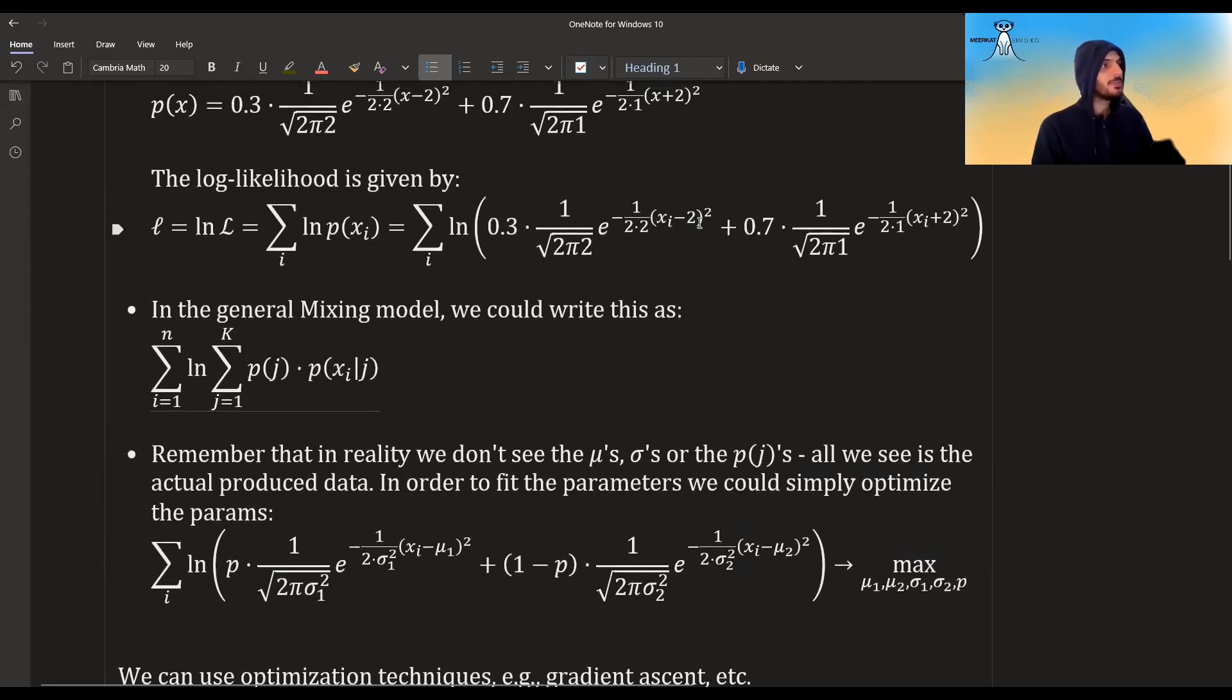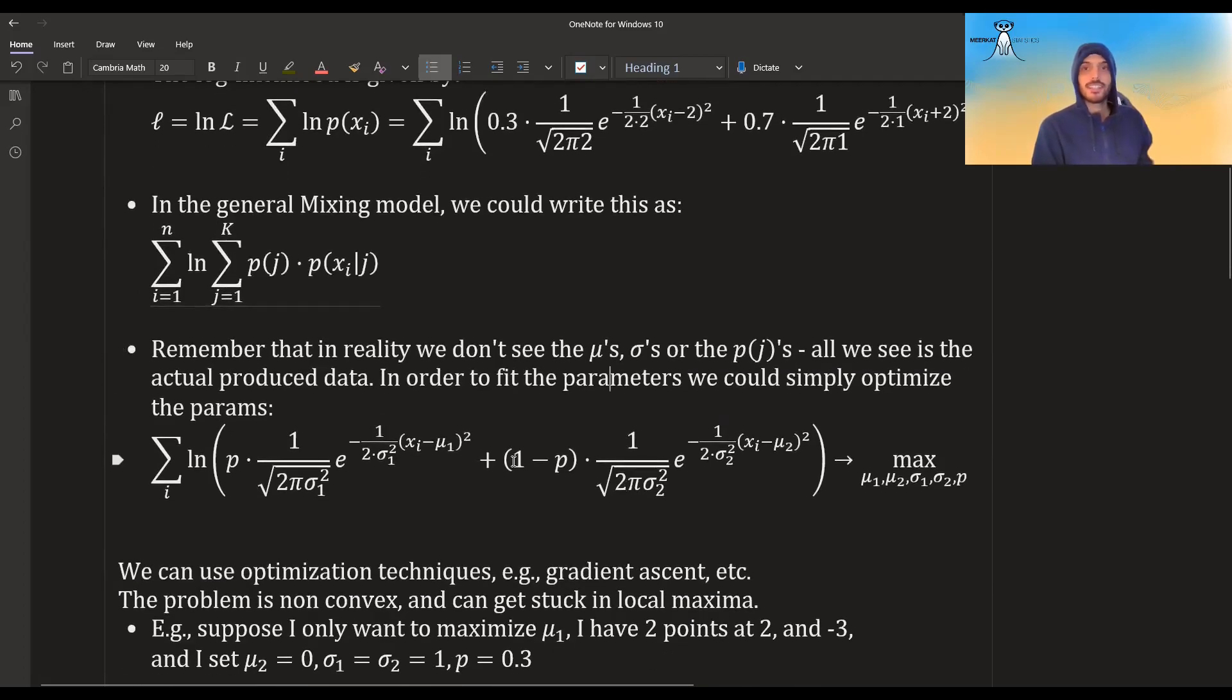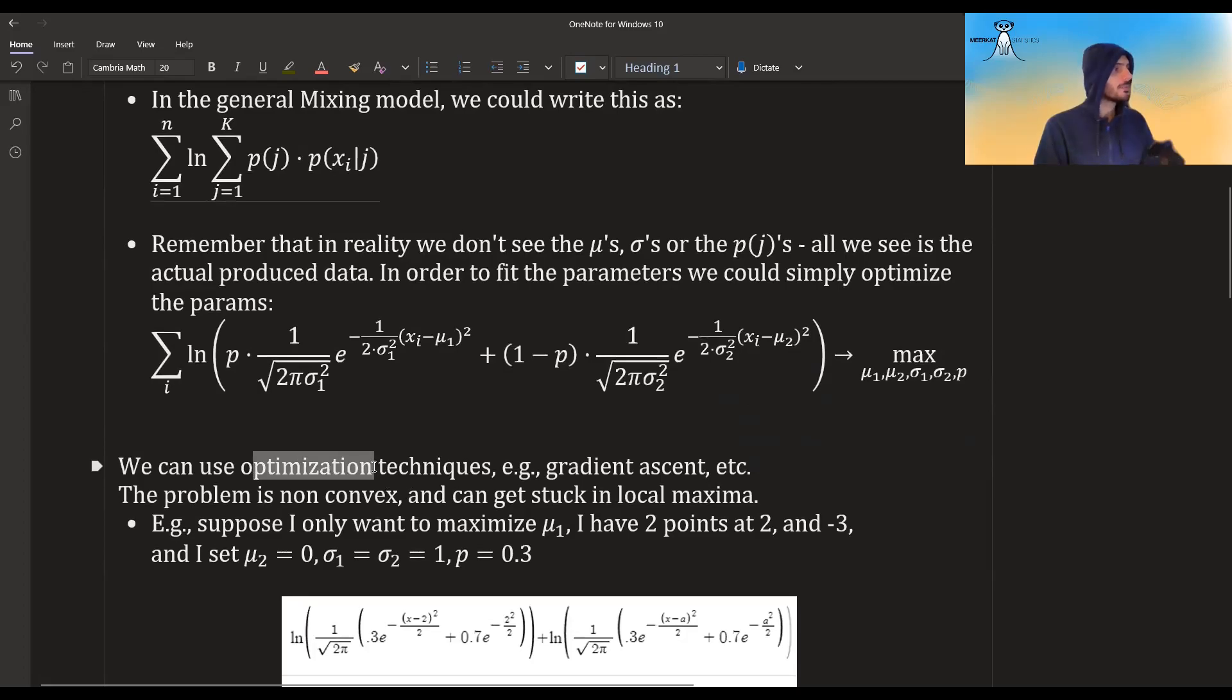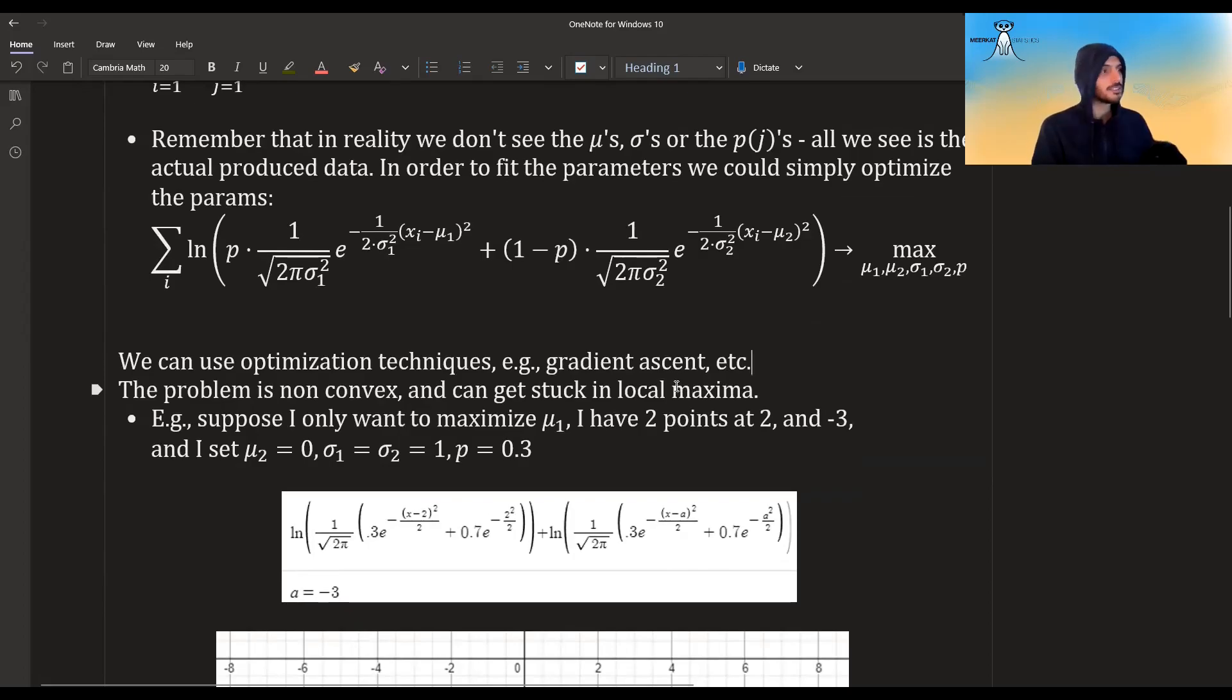Remember that in reality we don't see the mu's, we don't know the sigmas, we don't know the p's or the fees. All we have is our data. So what we have to do is we take them all to be parameters and then we try to maximize the log likelihood, minimize the negative log likelihood with regards to these parameters. We can use just regular optimization techniques, for example, gradient descent. There is generally no closed form solution. So you won't get what is the optimal mu and what is the optimal sigma. Maybe in this small toy example there is, I haven't really thought it through, but in more complex mixture models, finding an analytical solution could be impossible, but for the very least it's hard.